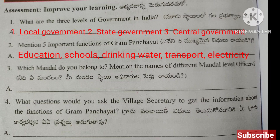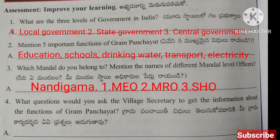Next question: Which mandal do you belong to? Mention the names of different mandal level officers. We belong to Nandigama Mandal and the three mandal level officers are MEO, MRO, and SHO.